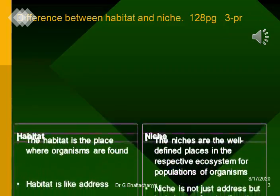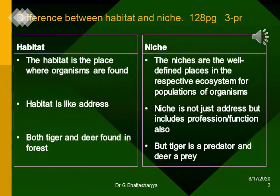Difference between habitat and niche: Habitat is the place where organisms are found, while niches are the well-defined places in the respective ecosystem for populations of organisms. Habitat is like the address of an organism. Niche is not just address, but includes profession or function also. For example, both tiger and deer are found in the forest habitat, but tiger is a predator and deer is prey — that is their niche.